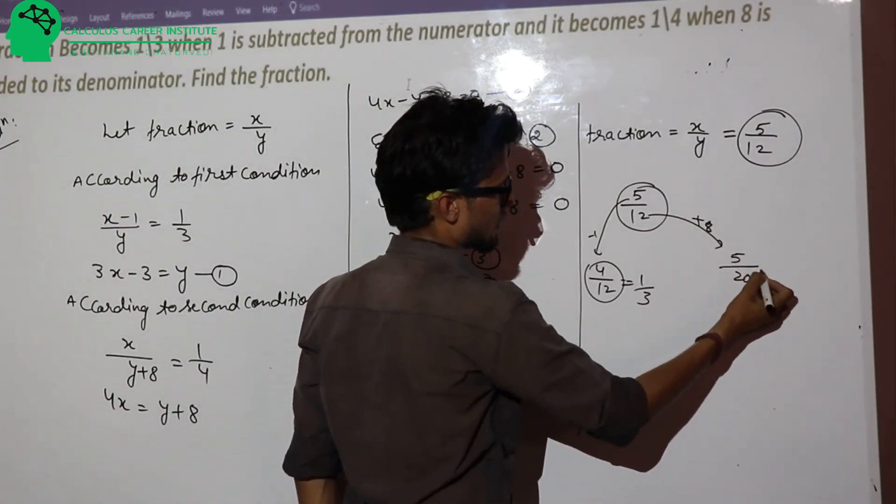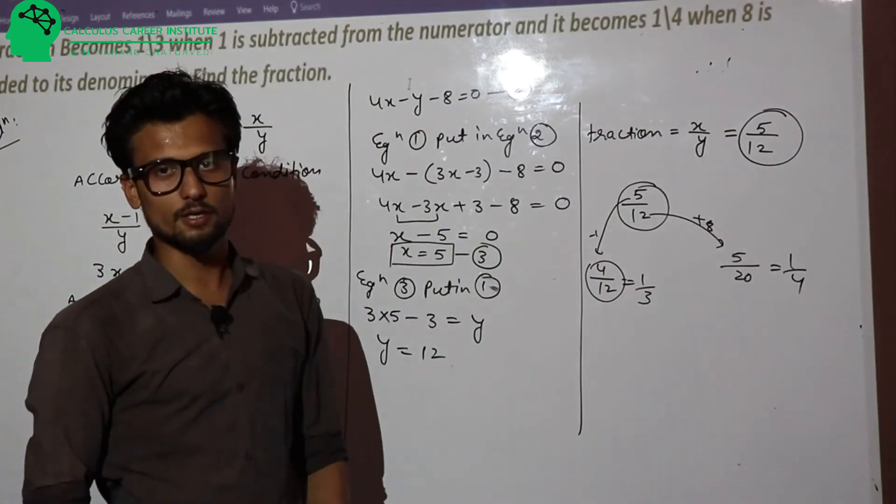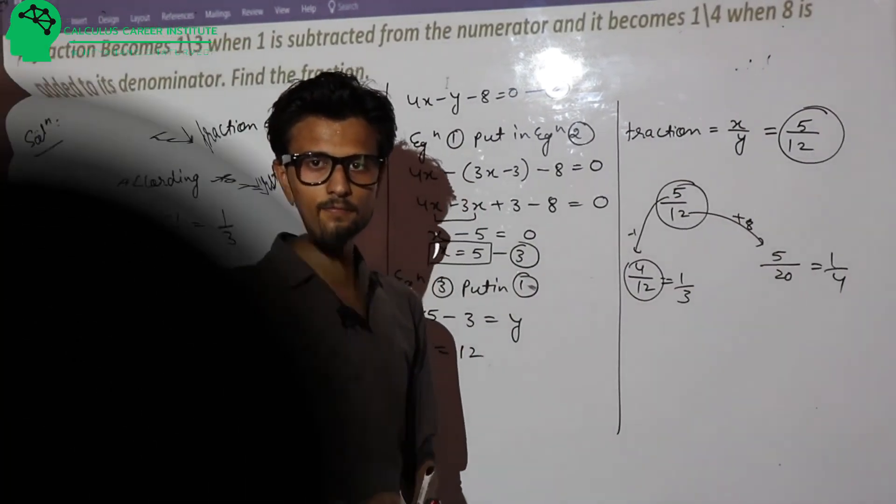And then you add 8 to the denominator. How much is it? 5 upon 20 is equal to 1 upon 4. We are following our question. Take care. Bye.